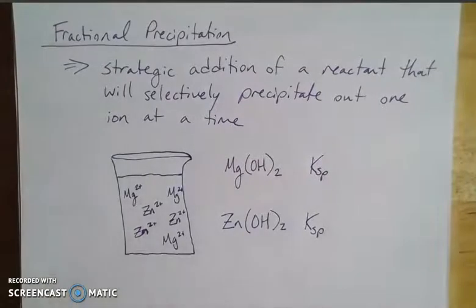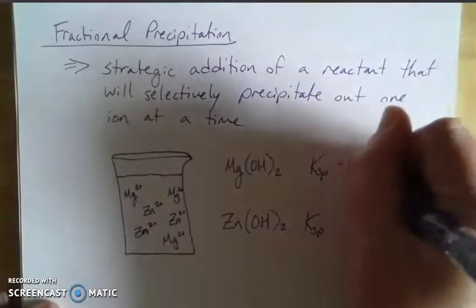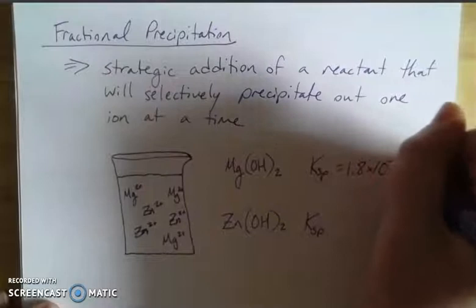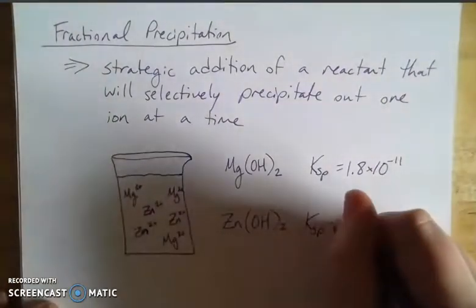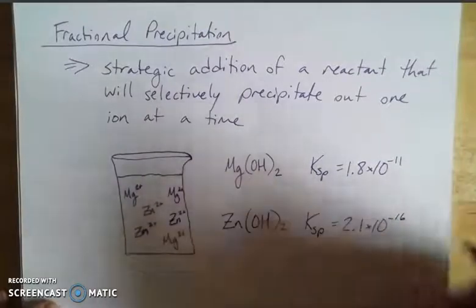So I looked up the KSP values for these, and magnesium hydroxide is 1.8 times 10 to the negative 11th. And the KSP value for zinc hydroxide is 2.1 times 10 to the negative 16th.